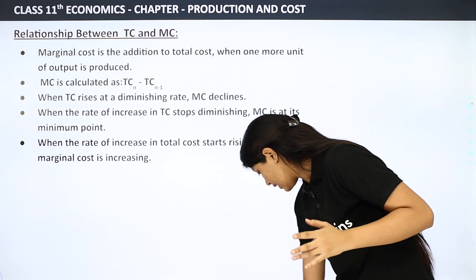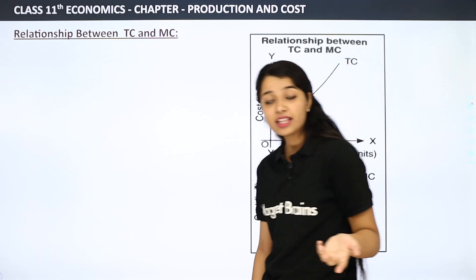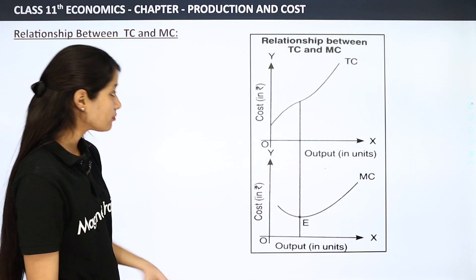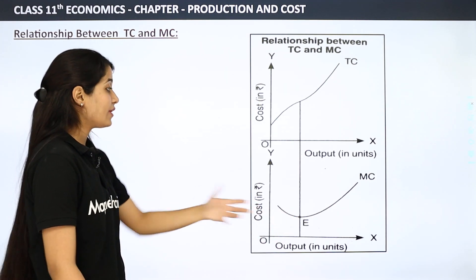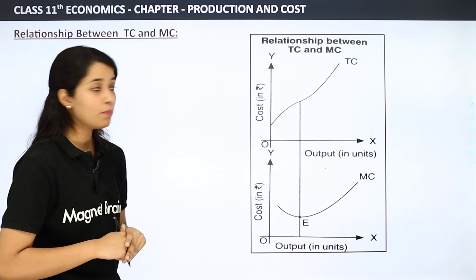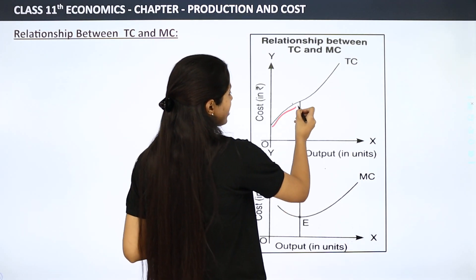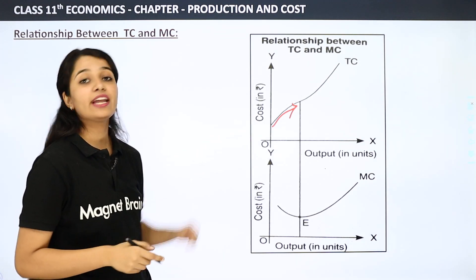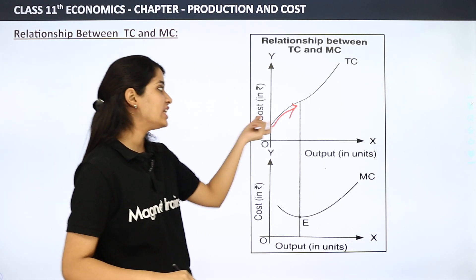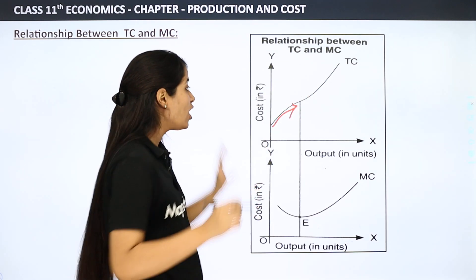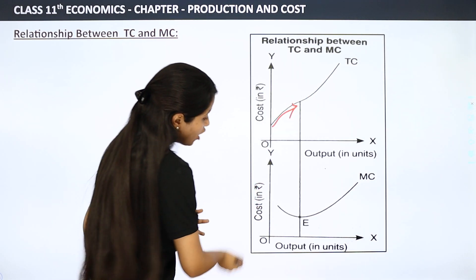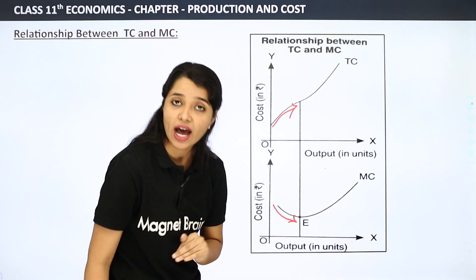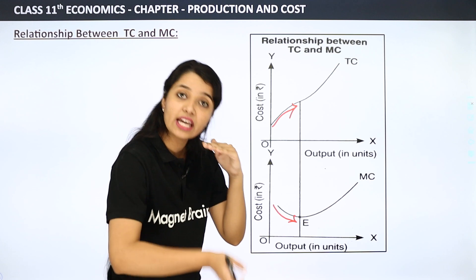Now let's see this graph to understand the relationships visually. This is our TC curve and this is our MC curve. At this point, our TC increases at a diminishing rate, so our MC falls — our marginal cost will fall.